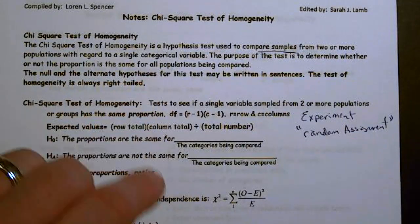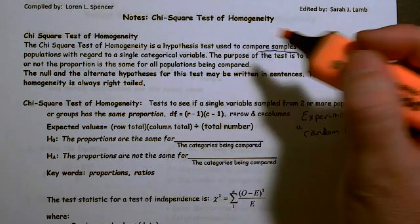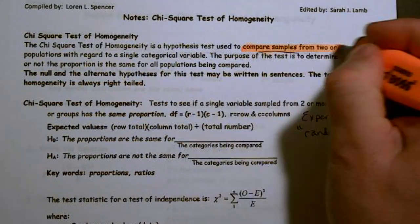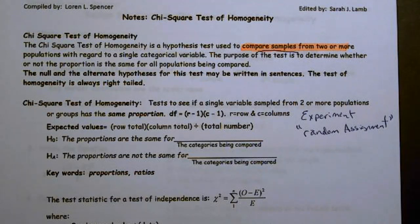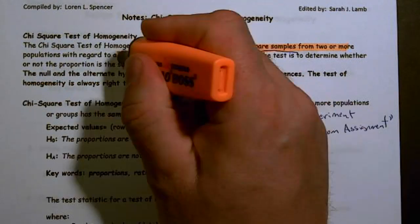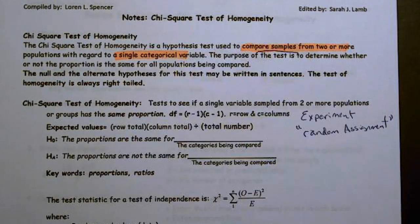This right here is a major distinction - multiple samples, two or more. That compares with the test for independence, which is one sample over multiple variables. This is two or more samples over one categorical variable. So this is really important to note that difference.